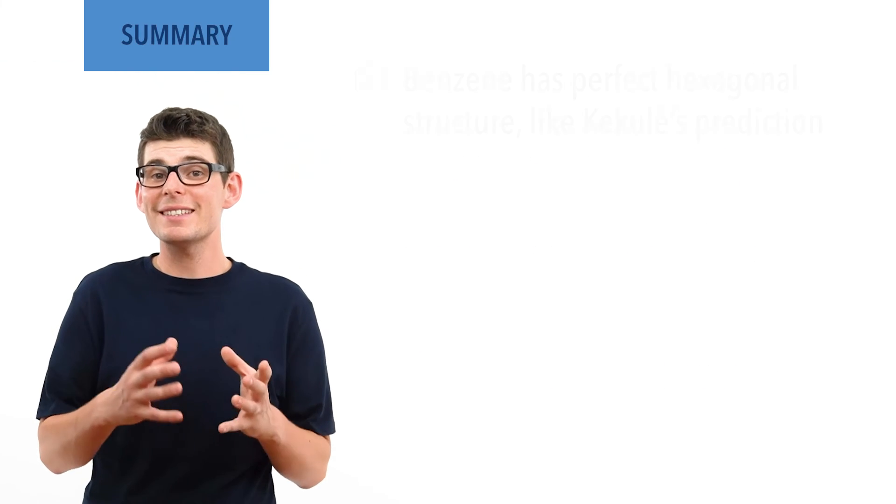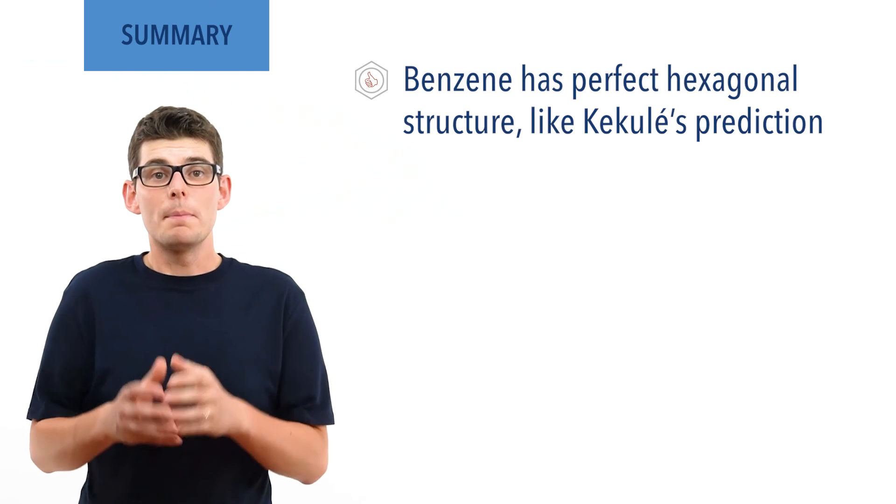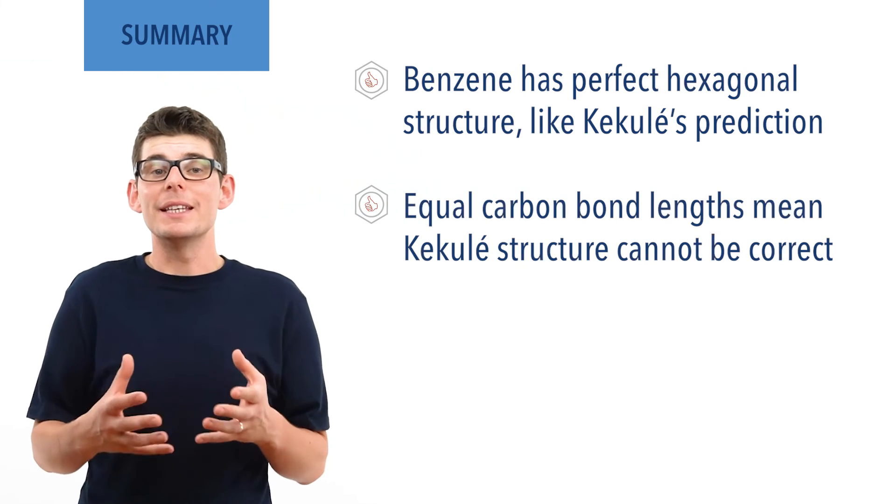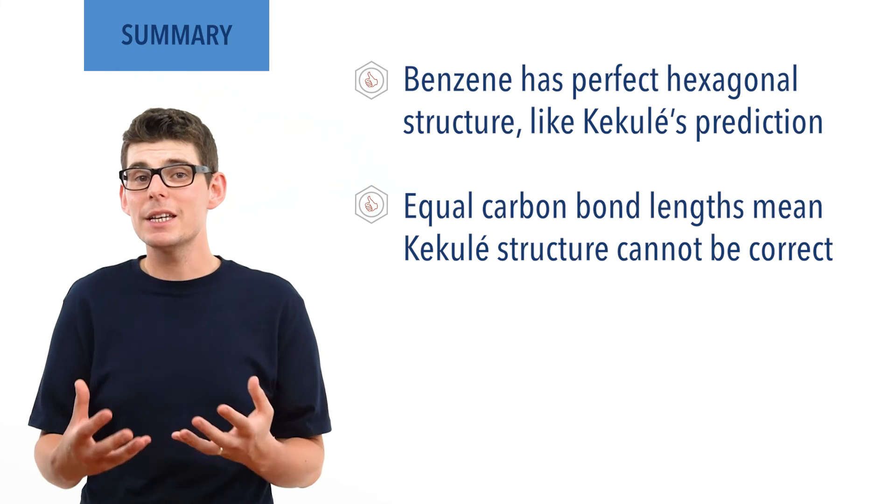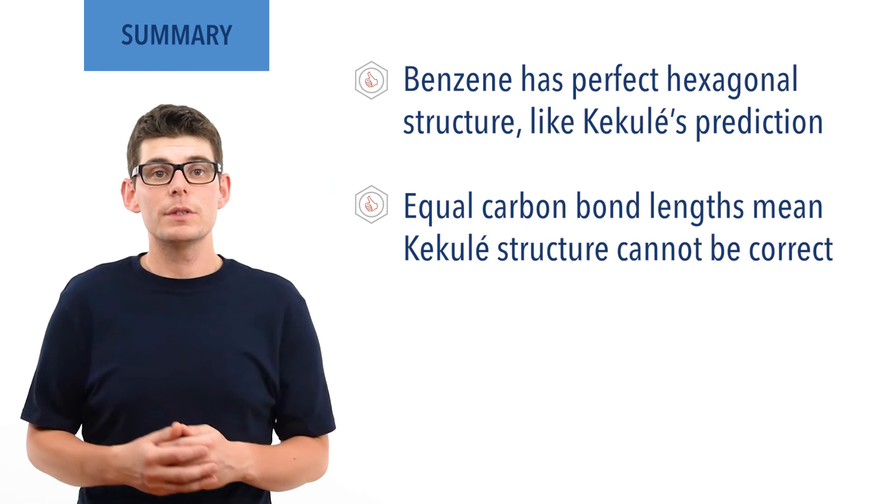Experiments have shown that benzene does have a perfect hexagonal ring, like Kekulé's prediction. But equal carbon bond lengths mean the Kekulé structure cannot be completely correct as single and double carbon bonds have different bond lengths.